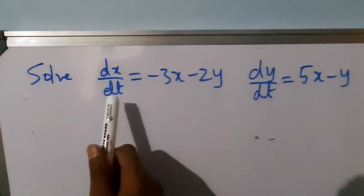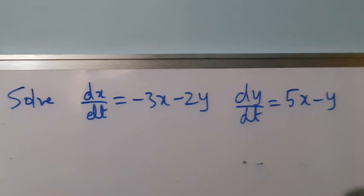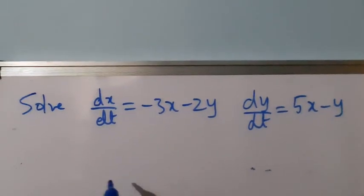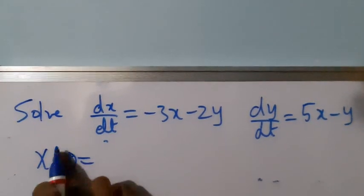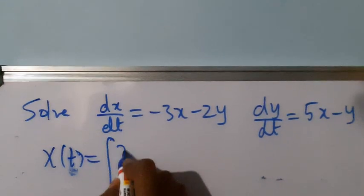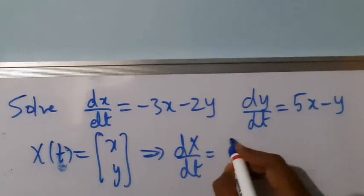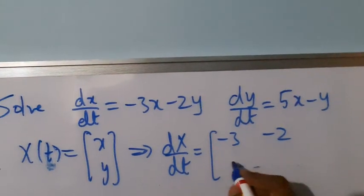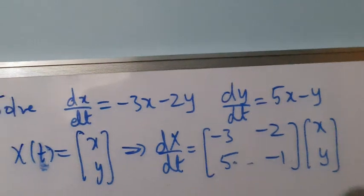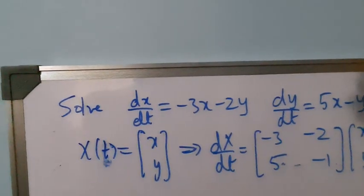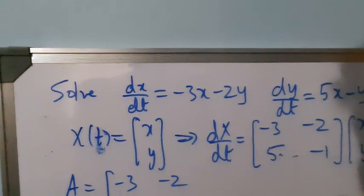In this example, I will be solving dx/dt = -3x - 2y, dy/dt = 5x - y. If we choose x(t) to be the vector [x, y], then dx/dt equals the matrix (-3, -2; 5, -1) times [x, y]. To solve this, we have the matrix A = (-3, -2; 5, -1).